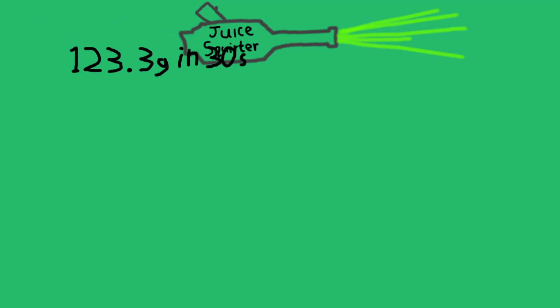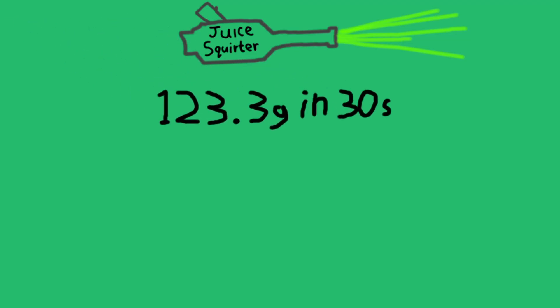Before I wrap things up, I will quickly mention flow rate. This might be obvious to some, but if you want to find the flow rate in cubic centimeters per minute, simply multiply your first flow test number by 2 to simulate the full minute,